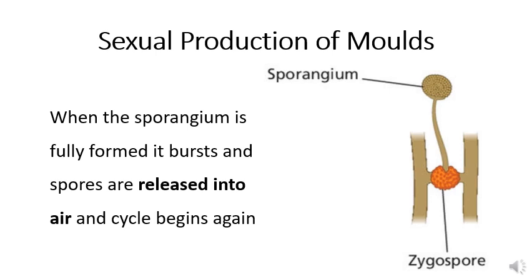Now the sporangium is at the top of the hyphae that came from the zygote spore. When the sporangium becomes full of spores, it's going to burst. These spores are going to be released into the air and fall either back on top of the food or move elsewhere. Once these spores land, either sexual or asexual reproduction will continue.